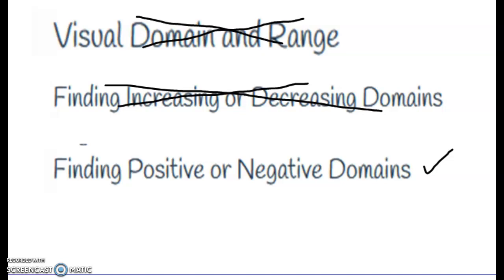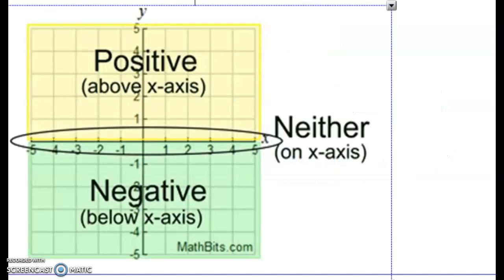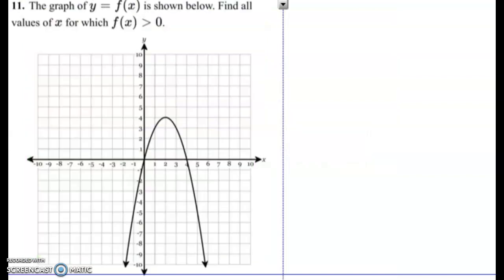Remember, domain is for the X, but as far as positive or negative, we're looking at the Y. To make it very simple: if it's on top of the X-axis it's positive, and if it's on the bottom of the X-axis it's negative. So up here is positive and down here is negative.